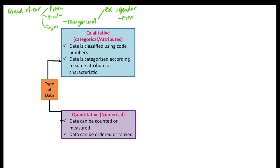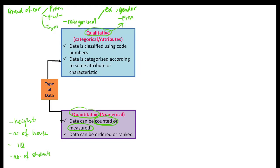The second type is quantitative data — dealing with quantity and numbers. Quantitative data is data that can be counted or measured. For example, your height can be measured; the number of houses can be counted; your IQ can be measured; the number of students can be counted. Qualitative data is typically in words, and quantitative data is typically in numbers.